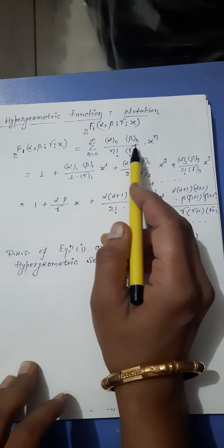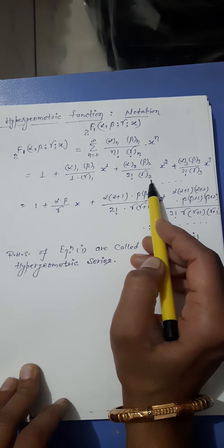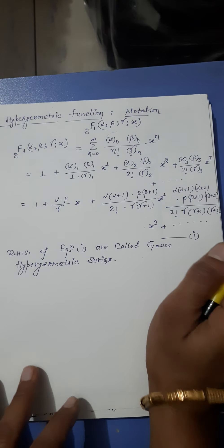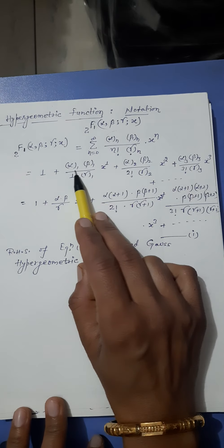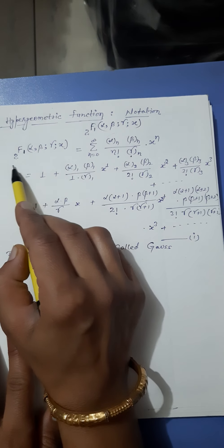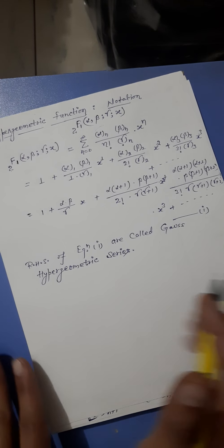If we put n=0 in this term, we get 1. If we put n=1 we get the next term, n=2 the next term, and so on. The notations with α, 2α, 3α in this form on the RHS of equation first are called the Gauss hypergeometric series. It is known as the Gauss hypergeometric function notation and as the Gauss hypergeometric series.